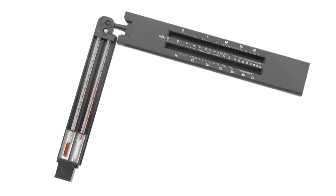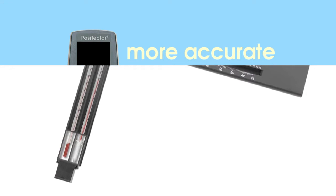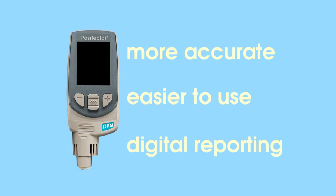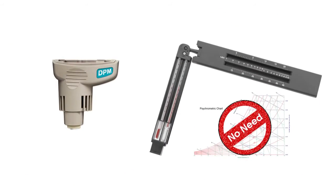When compared to old methods, like sling psychrometers, the Positector DPM is more accurate, easier to use, and includes advanced recording and reporting functionality. There's no need to interpret complex lookup charts or use weather charts with barometric tables.